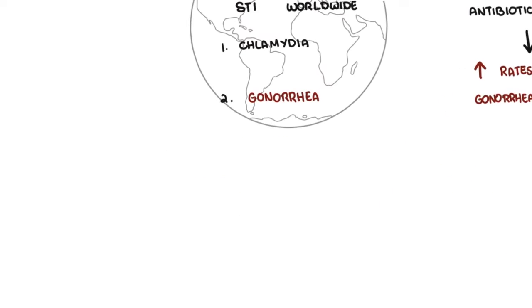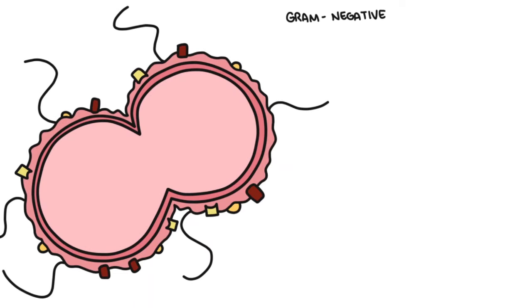Let's talk about the life cycle of Neisseria gonorrhea. Neisseria gonorrhea is a gram-negative, obligate, fastidious diplococcus bacteria.